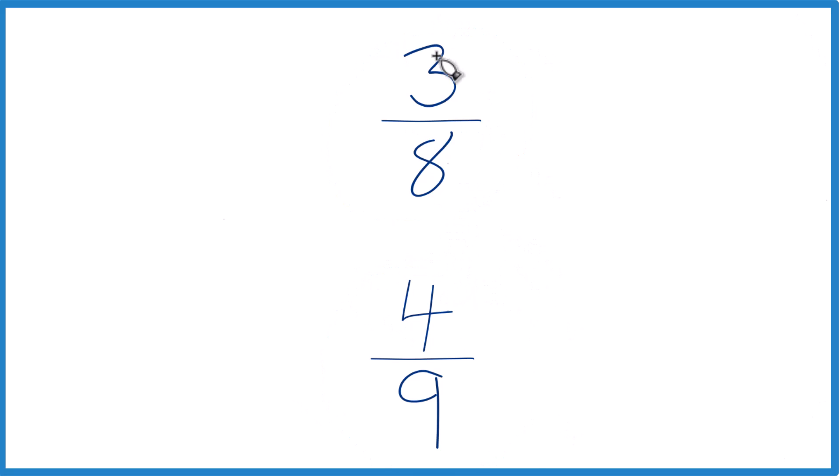So we could just divide 3 by 8 on a calculator, 4 by 9 on a calculator, and compare the decimals. That would work. The other way is to find a common denominator here for these two fractions.